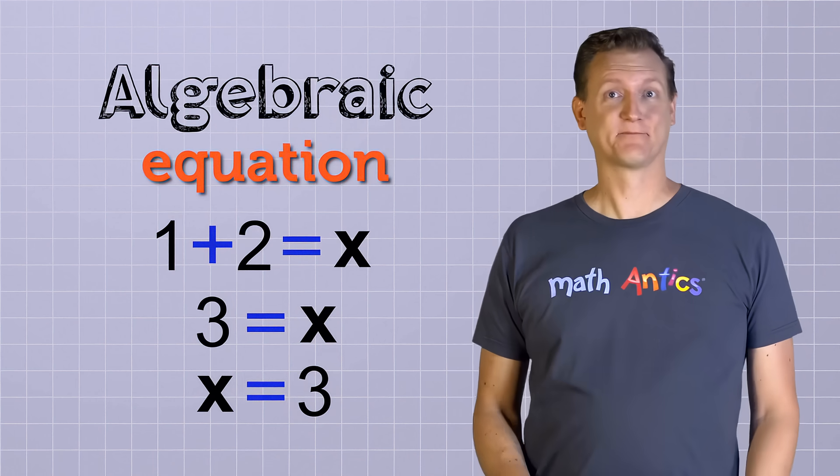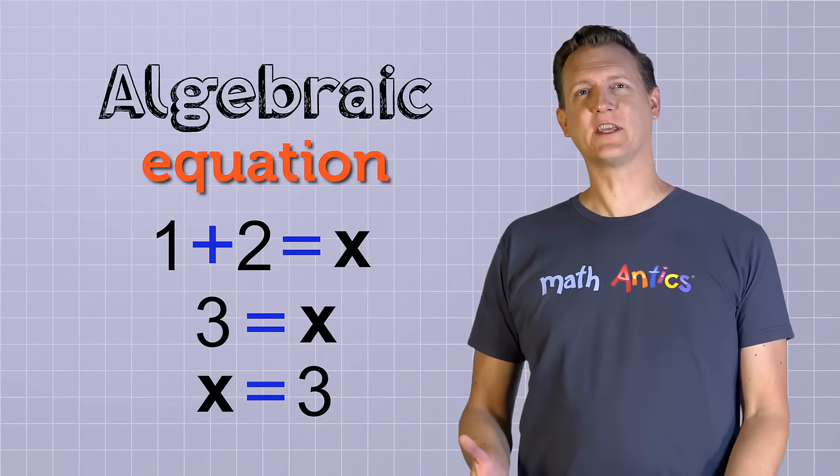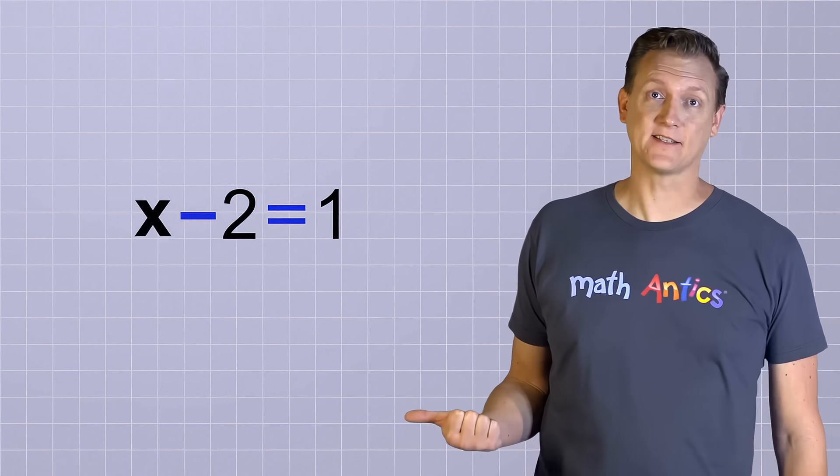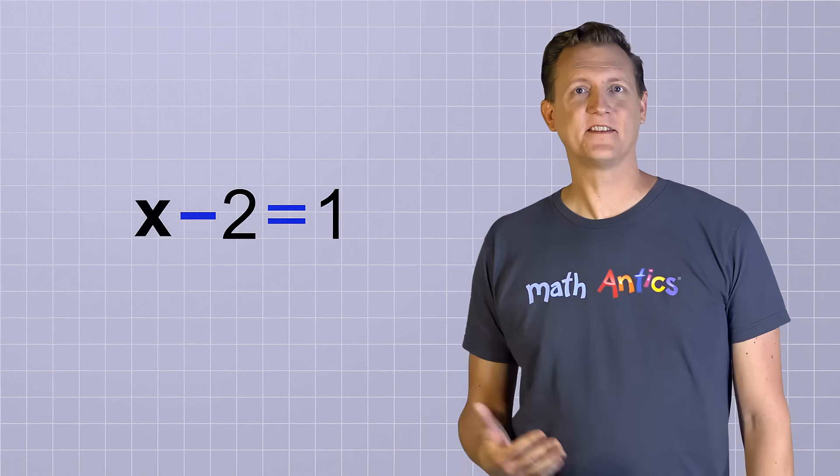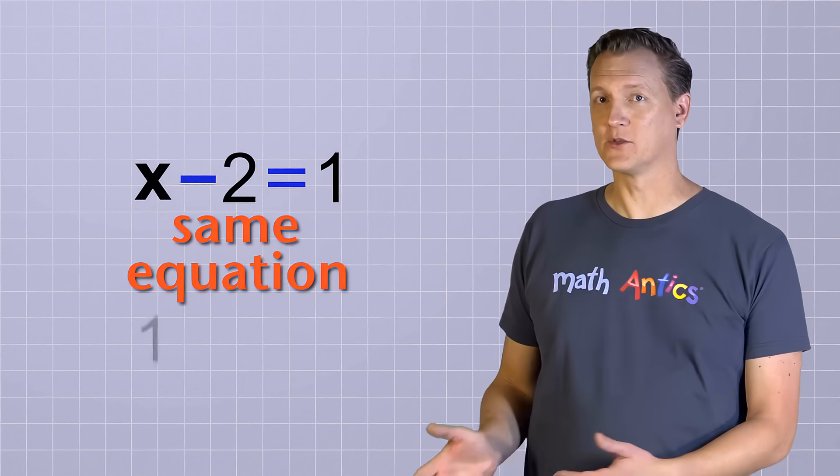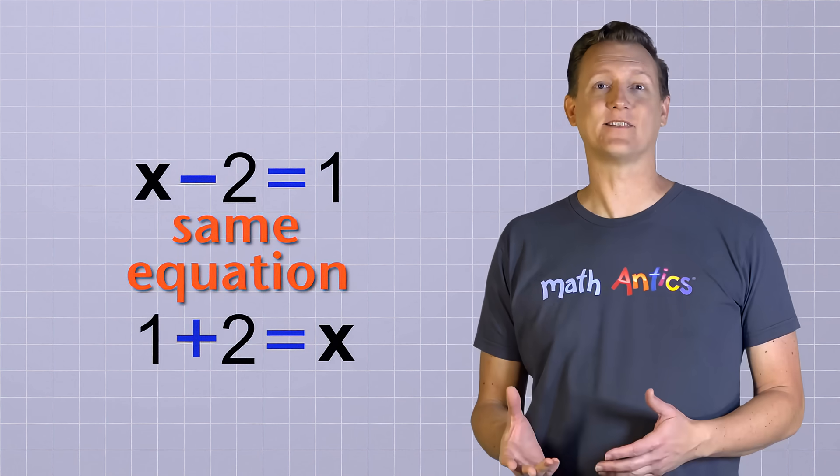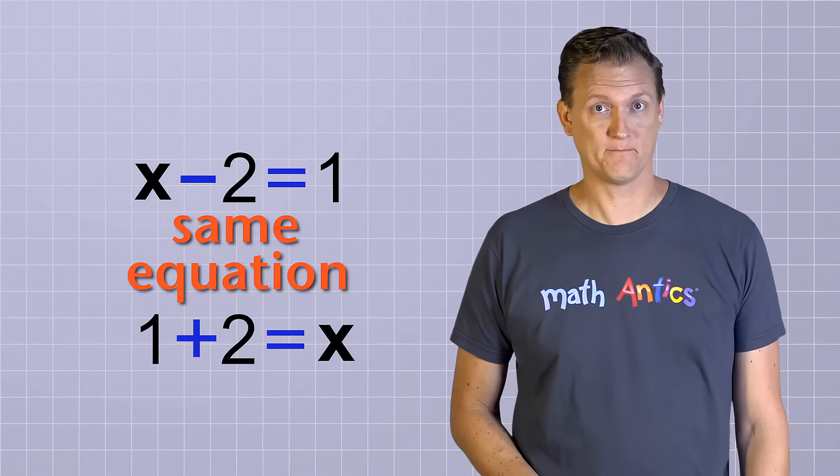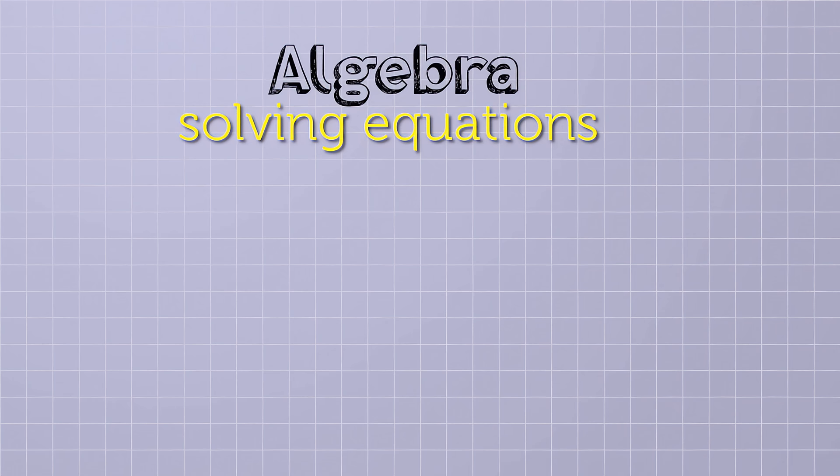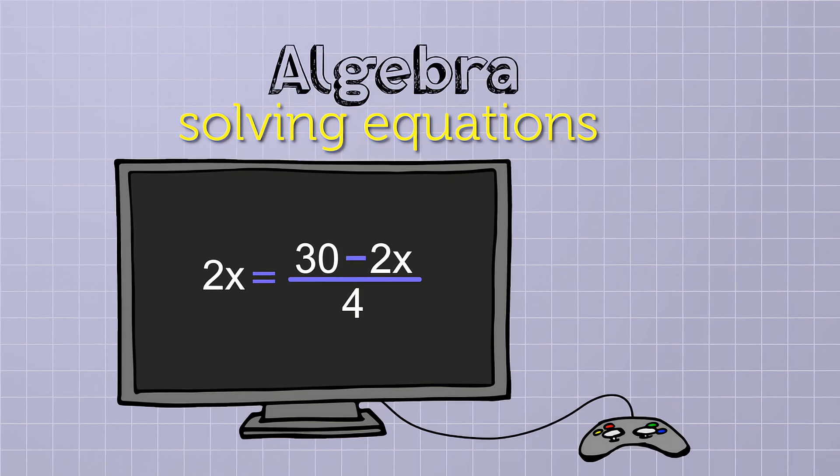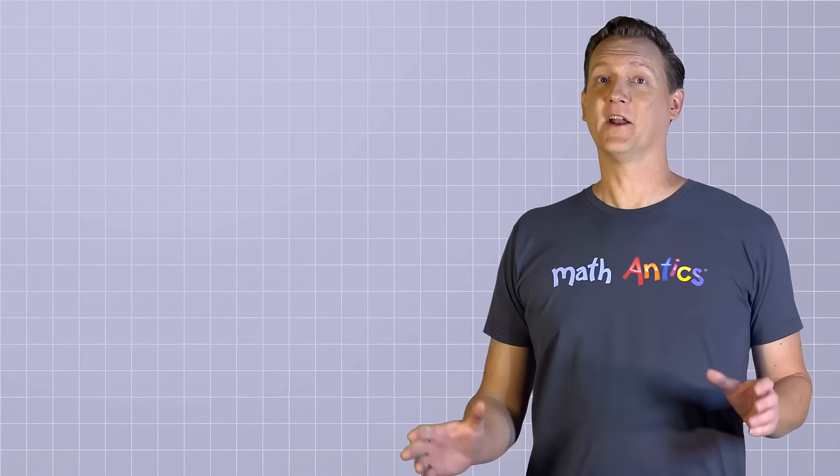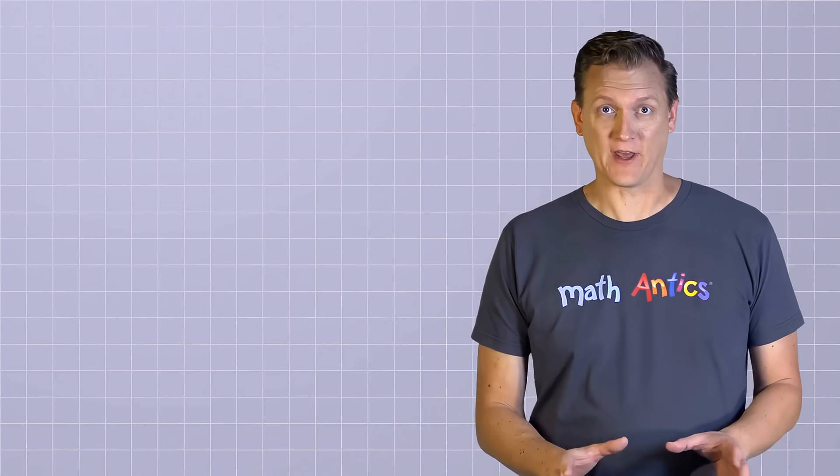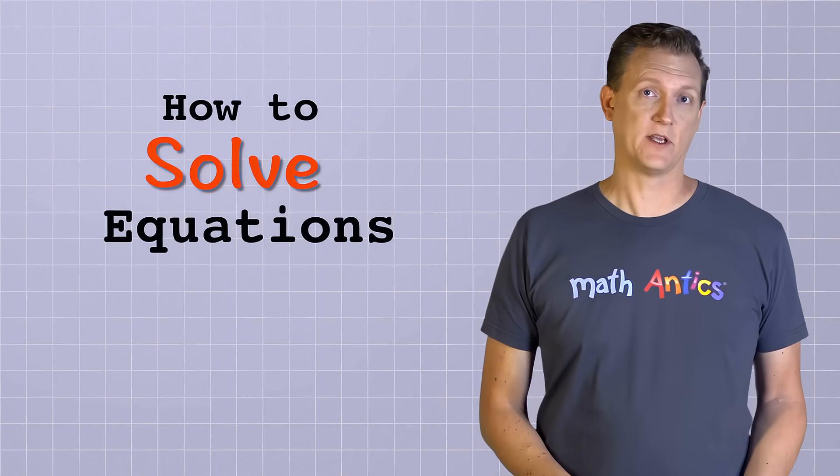That almost seems too easy, doesn't it? And that's why in algebra, you're usually given an equation in a more complicated form, like this: x minus 2 equals 1. This is exactly the same equation as 1 plus 2 equals x, but it's been rearranged so that it's not quite as easy to tell what x is. So in algebra, solving equations is a lot like a game where you're given mixed-up, complicated equations, and it's your job to simplify them and rearrange them until they're nice simple equations, like x equals 3, where it's easy to tell what the unknown values are.